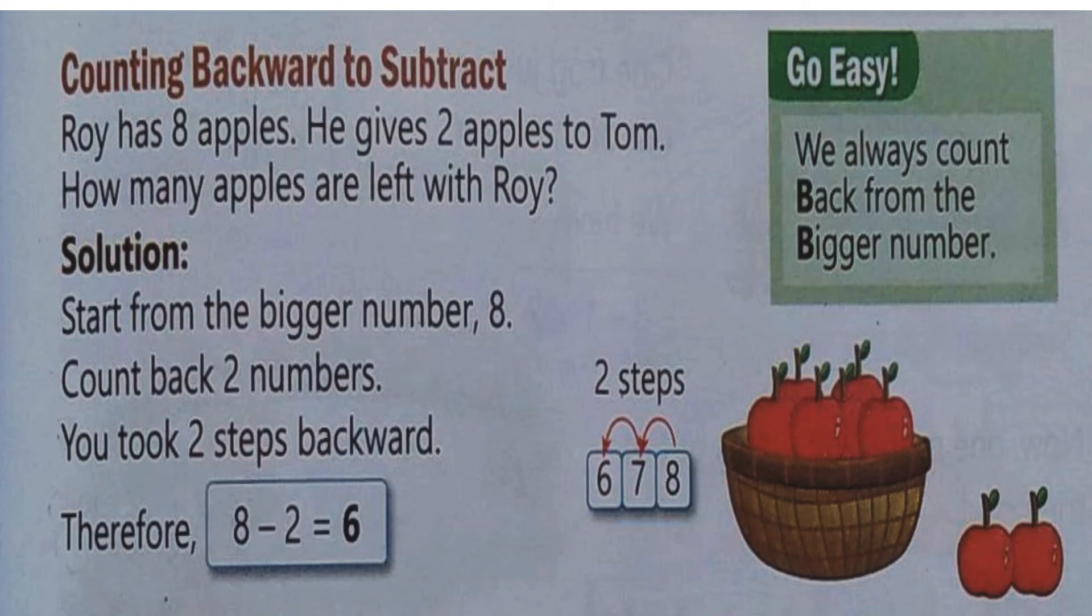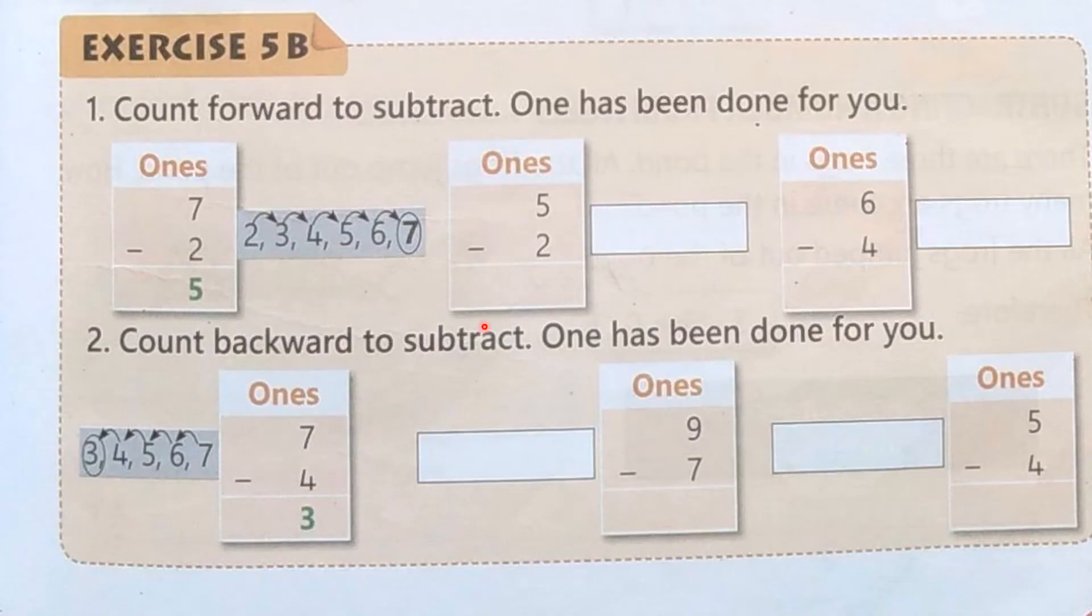Now see. Let's do it here also. So now you can see here, this is the question. And count forward to subtract. So as you can see here, we have to count forward. That means we have to jump. We have to start with the smaller number and reach on 7. So here also same thing, we will start with 2, 3, 4 and 5. So let's start jumping. 1, 2 and 3. That means our answer is 5 minus 2 is 3.